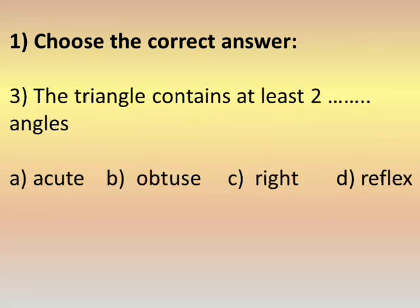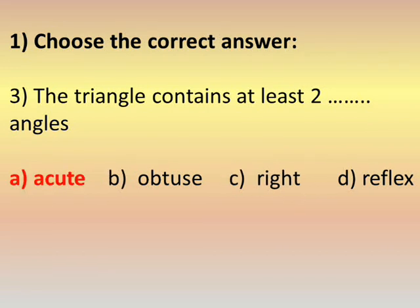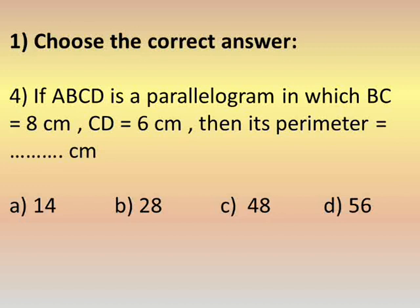Number three: the triangle that contains at least two acute angles. If you have acute — that gives an acute triangle. Acute and obtuse — obtuse triangle. Acute and right — right angle triangle. So the answer is: at least two acute angles.